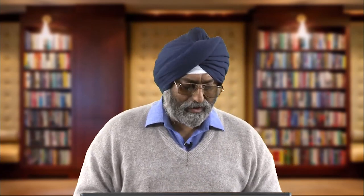We also discussed issues relating to investor perception when he takes up certain strategies. For example, if he takes up a long call — as you can see on this screen — he makes a profit if the stock price or the underlying price goes up and the profit is unbounded. In other words, the profit goes on increasing as the price of the underlying increases.